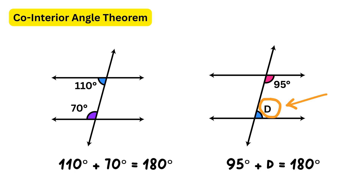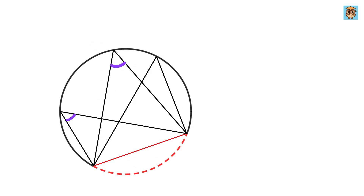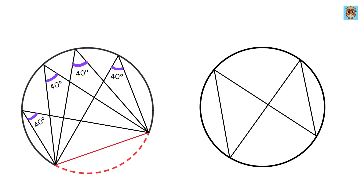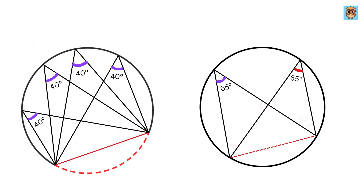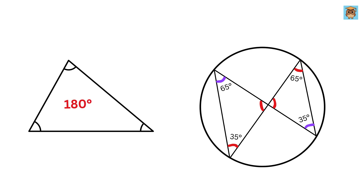Next, angles subtended by the same arc are equal. If an arc subtends an angle at multiple points on a circle, all such angles are equal. For example, if this angle is 65 degrees, any other angle subtended by the same arc will also be 65 degrees. Similarly, if another angle is 35 degrees, all angles from that arc are 35 degrees. Since the sum of angles in a triangle is 180 degrees, can you find the remaining angle?